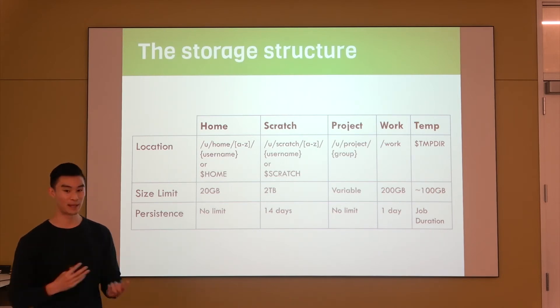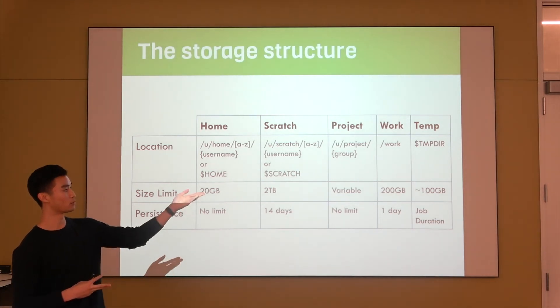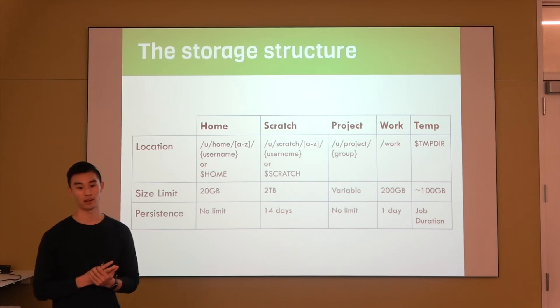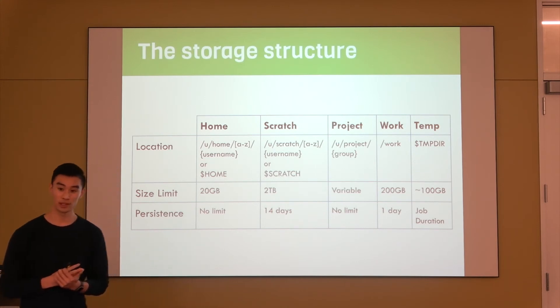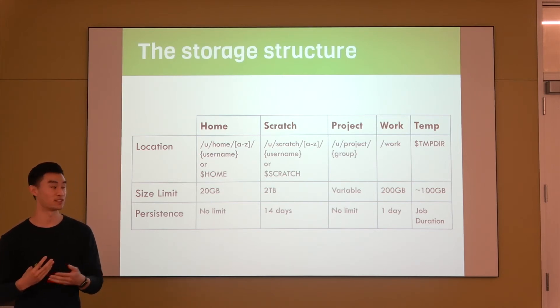And then finally, you have the temp directory. This one I would avoid using, but just to let you know about it, it's 100 gigabytes per node that's allocated, and you can access it through this variable TMPDIR. This variable is only available if you're within a job, so you can't access this when you're on a login node. It's assigned to you when you submit a job.